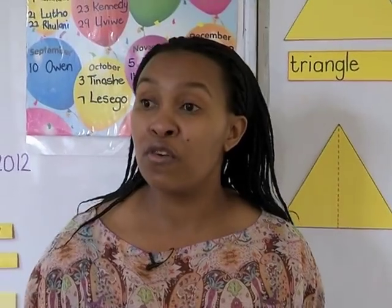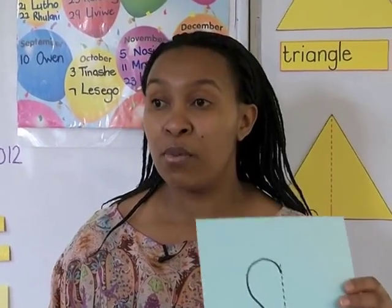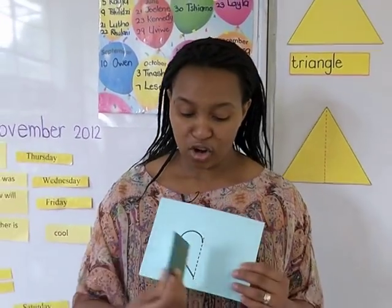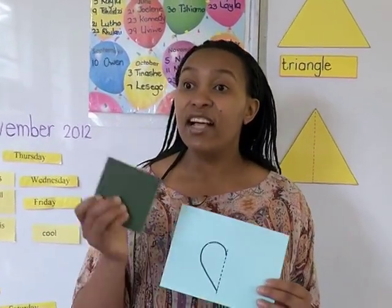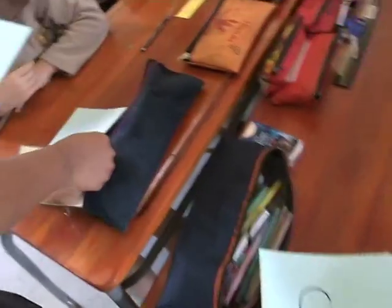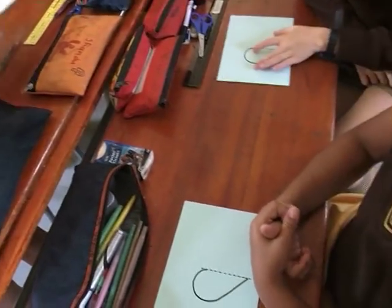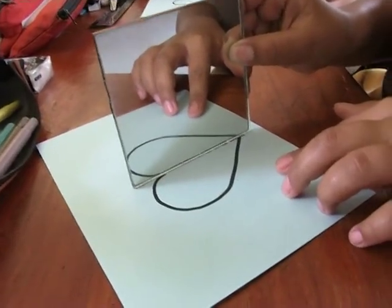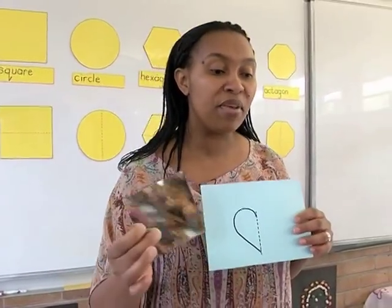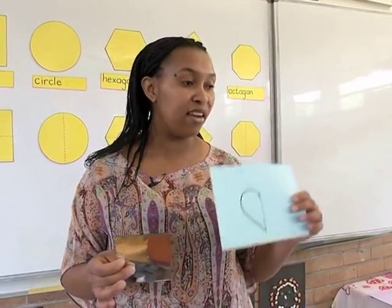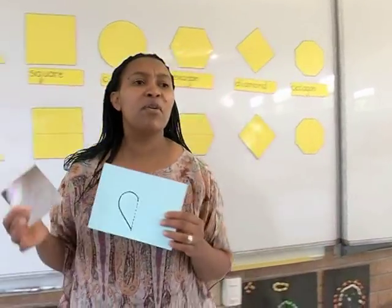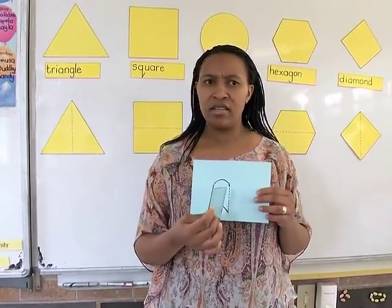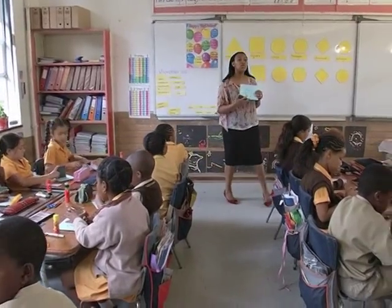I'm now going to give each of you a mirror and half of a shape. I want you to hold your mirror along the dotted line and tell me what you see in your mirror. I thought since symmetry involves a mirror image, we could use mirrors to reinforce the concept. It's a heart. Is the other side of the heart that you see in your mirror similar to the side I already gave you? Yes. So can we say that a heart is symmetrical? Yes, it is symmetrical. Because it has two equal sides.